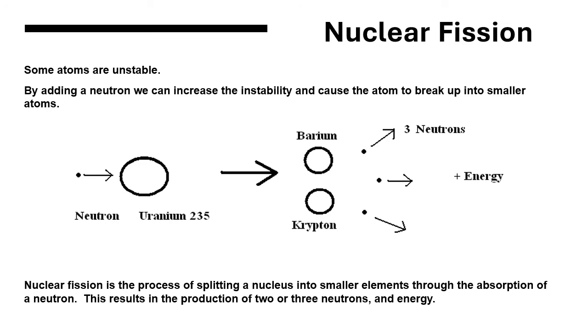This process releases neutrons from the nucleus. We can see three neutrons being ejected by the barium and the krypton, and this process also releases energy.